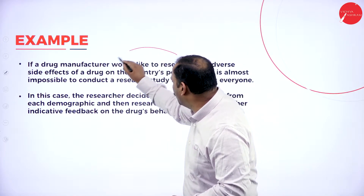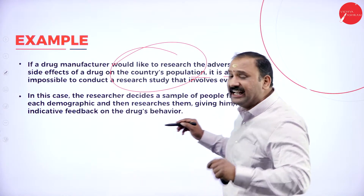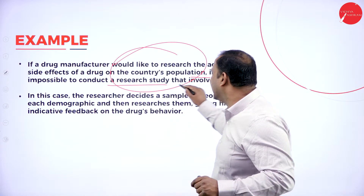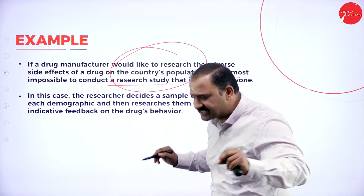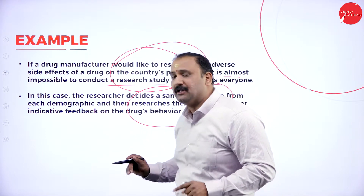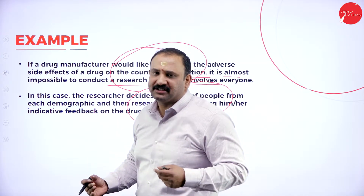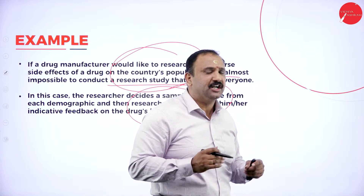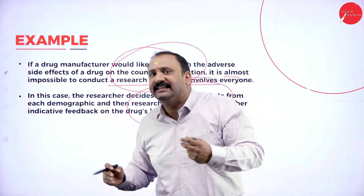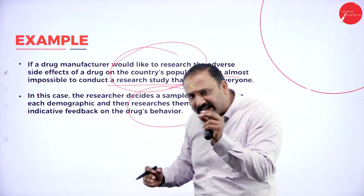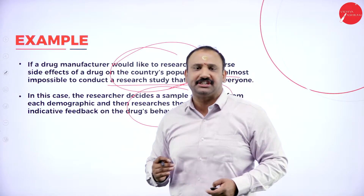For example, if a drug manufacturer would like to research the adverse side effects of a drug on a country's population, it is almost impossible to conduct a study involving everyone. So the researcher decides on a sample of people from each of the demographics as far as possible, researches them, and derives a correct result. In sampling, we try to understand the effects on a large population by collecting a smaller sample and studying its various characteristics.